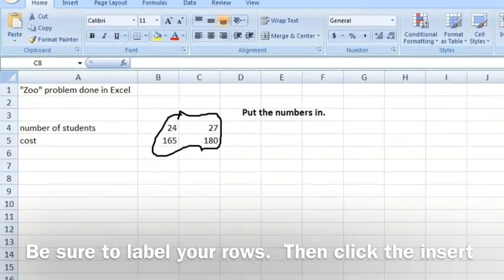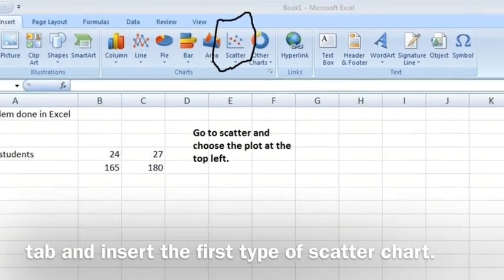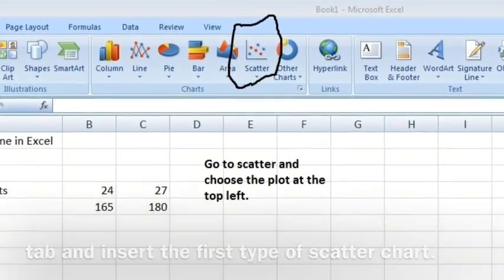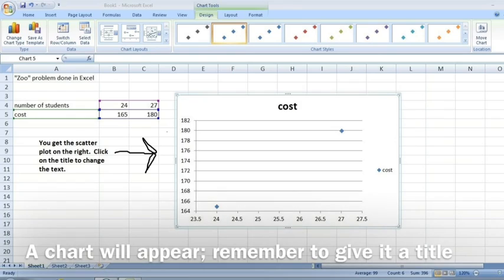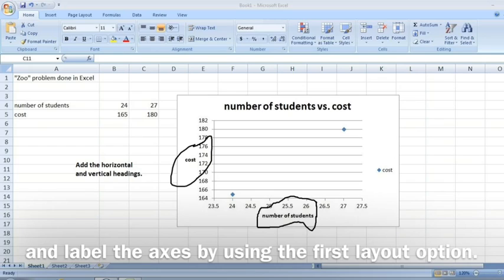Be sure to label your rows, then click the Insert tab and insert the first type of scatter chart. A chart will appear. Remember to give it a title and to label the axes by using the first layout option.